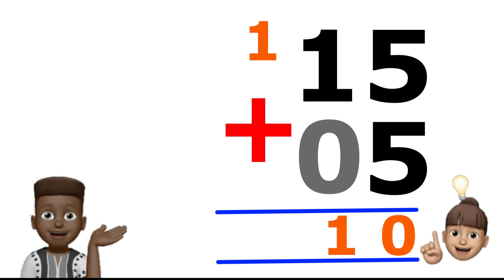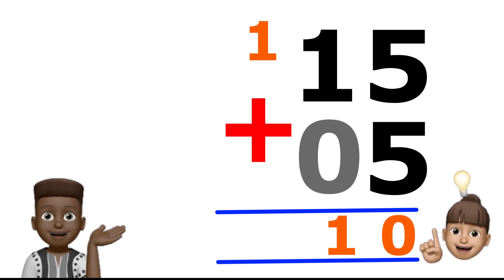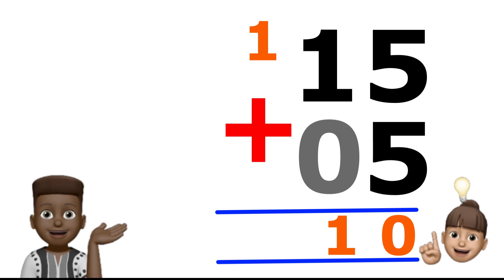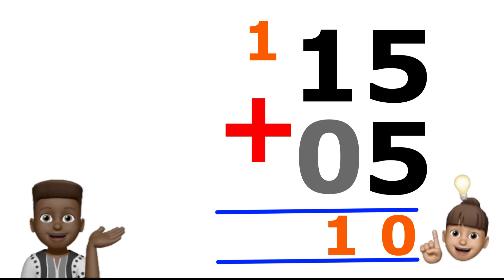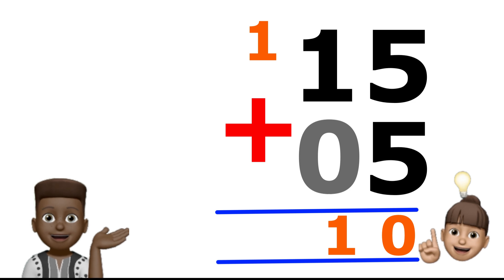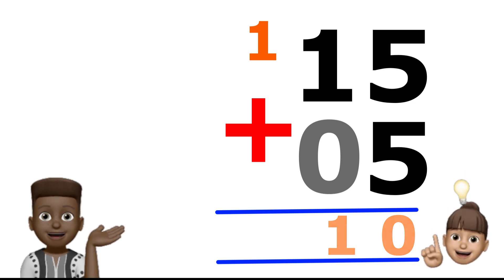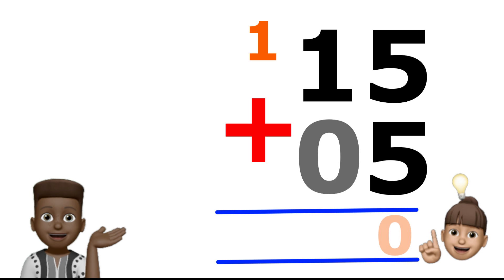And what is left after we remove that one? Zero! That's right! So, that's what we'll write under the fives! That's the first step!